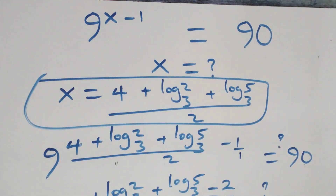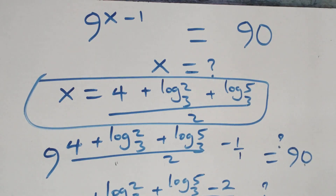Therefore we conclude that x equals to 4 plus log₃2 plus log₃5, all over 2, satisfies this given problem. Thank you for watching — don't forget to subscribe for more videos and turn on the notification bell. Share this video and put your comment. See you next time, bye for now.